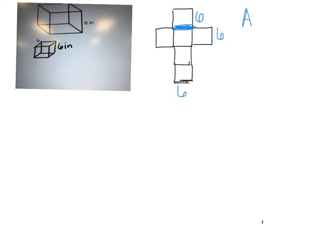Okay, so we're going to start out with base times height. What is the base and height of one of the squares? Six by six. So the area is going to be six times six.